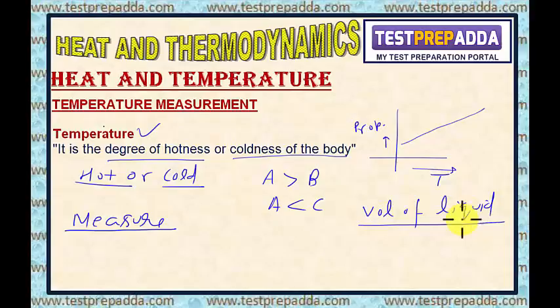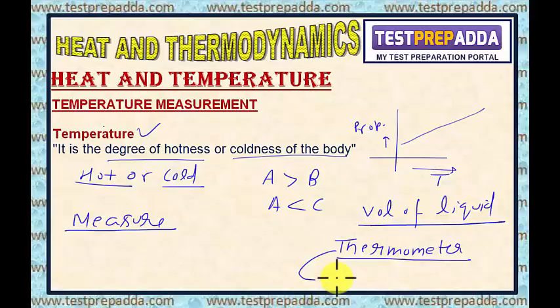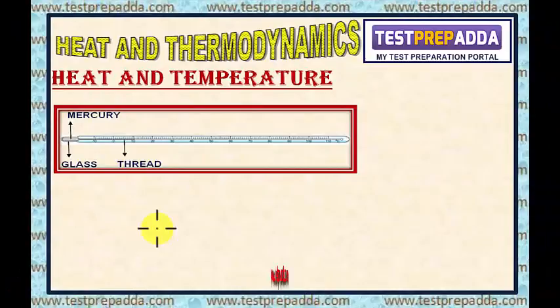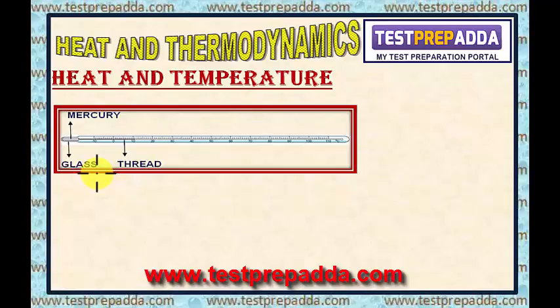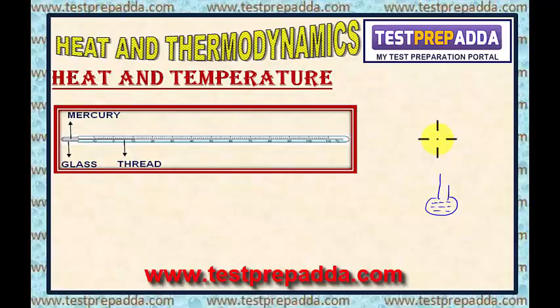Dear students, you must be aware of a liquid-in-glass type thermometer. Different liquids which can be used for this purpose include mercury and alcohol. For example, in a mercury thermometer, mercury liquid is taken in a glass bulb terminating in a long capillary.